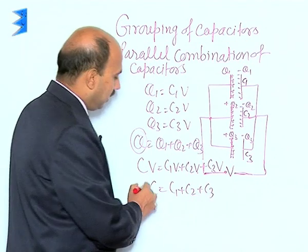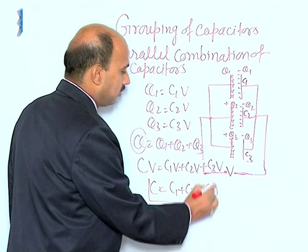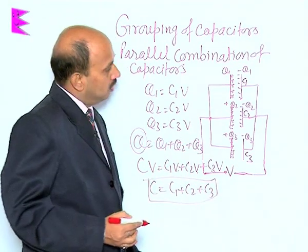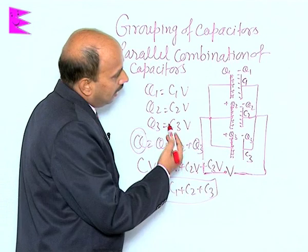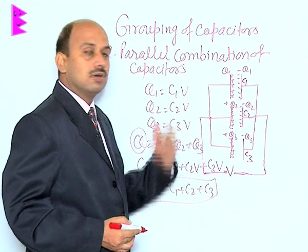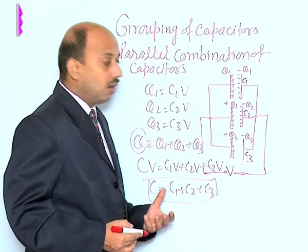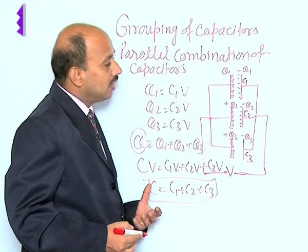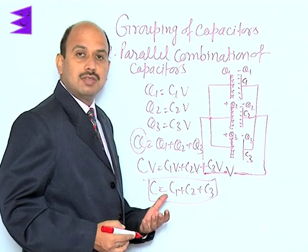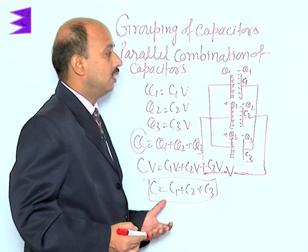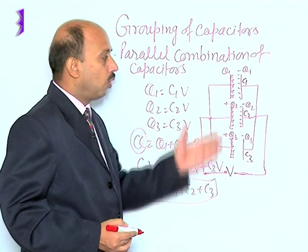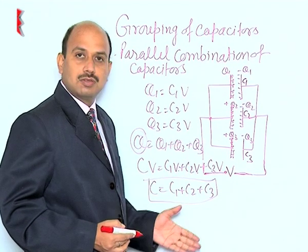So the equivalent capacitance is greater than any individual capacitance. One very important point: in a parallel combination, the voltage V remains the same for all the capacitors.